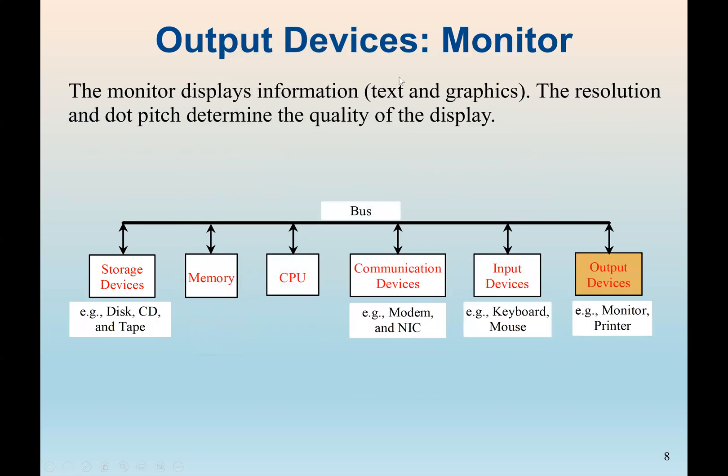We also have the output device. Examples here are the monitor and printer. So normally an output device would be any device that can display the results or output information from the computer. A good example would be the monitor. Here we see the monitor displays information in the form of text and graphics. Now the resolution and dot pitch determine the quality of the display.